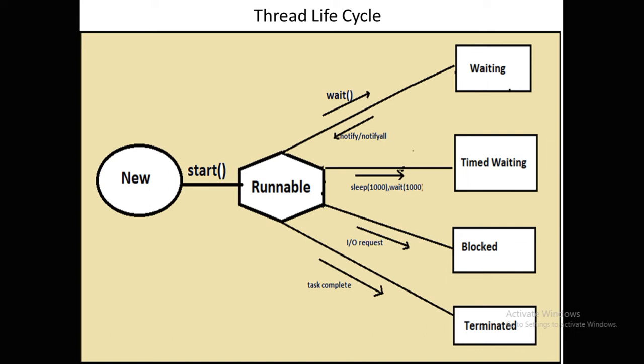The New state comes whenever you create a thread — you create a class which is a thread and initialize it, but you have not used the start() method to start that thread, so the thread is in the New state, meaning it is just initialized. Whenever you call the start() method on the thread object, it will come to the Runnable state, meaning the run() method of the thread will be executed. After the run() method executes, the thread can go to one of four states.